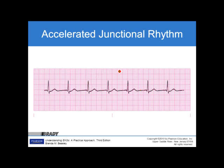Using the six-second strip method on this accelerated junctional rhythm: counting seven beats times ten gives 70 beats per minute. Step two: it is nice and regular. Step three: looking for P waves — there are none. No P waves are discernible. Step four: PR interval is non-discernible due to the absence of P waves. Step five: there is a QRS complex and it is less than 0.12 seconds. An accelerated junctional rhythm is identified by a QRS with no P waves or inverted P waves, with a rate greater than 60 beats per minute.